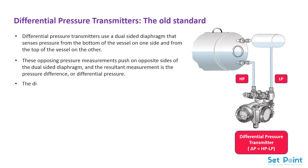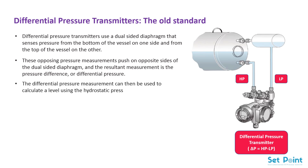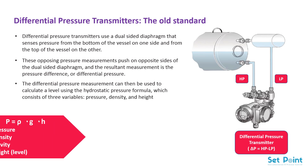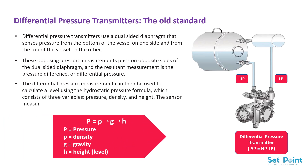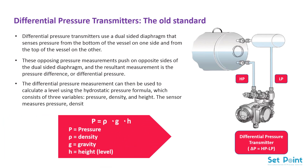The differential pressure measurement can then be used to calculate a level using the hydrostatic pressure formula, which consists of three variables: pressure, density, and height. The sensor measures pressure, density is input as a constant by the customer, and the height is the level.